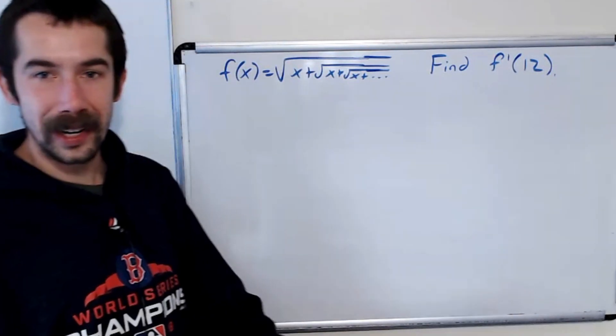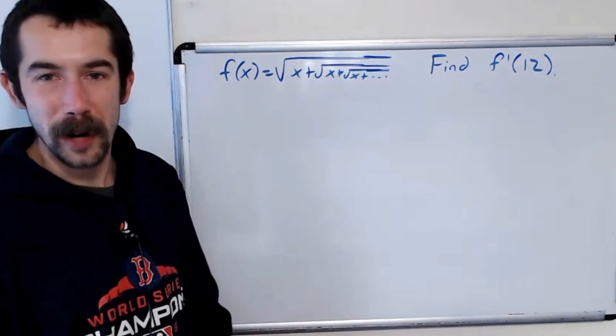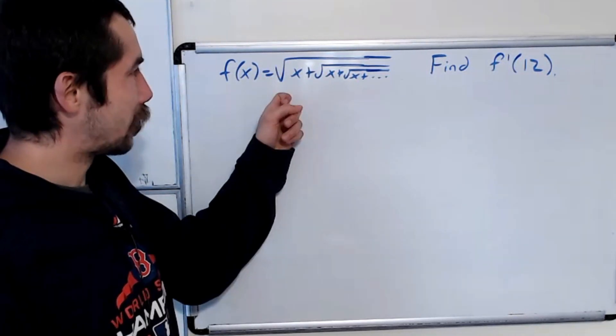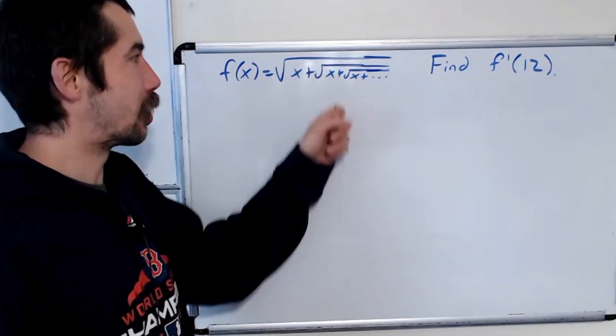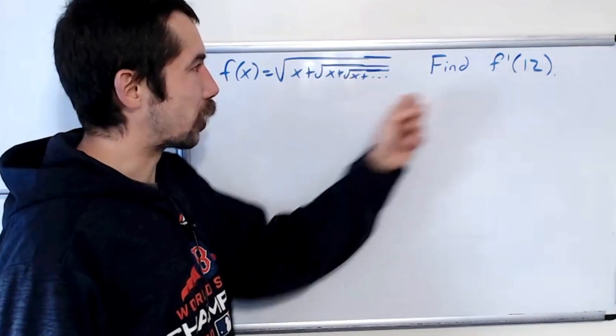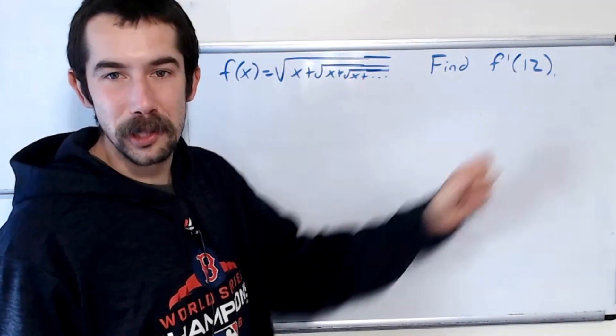Happy learning! We got a Calc 1 challenge problem for you today. Let f of x be the function square root of x plus the square root of x plus the square root of x. Right, you've seen this function before. We want to find the derivative of this function at x equals 12.